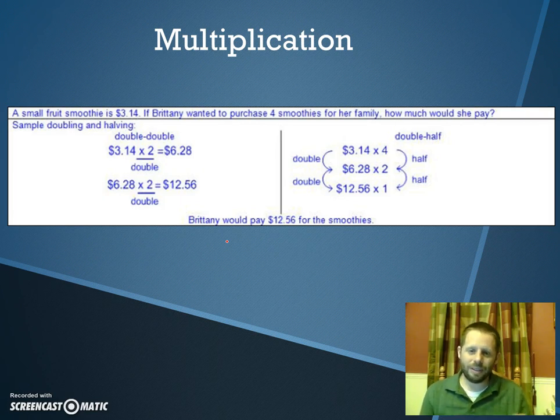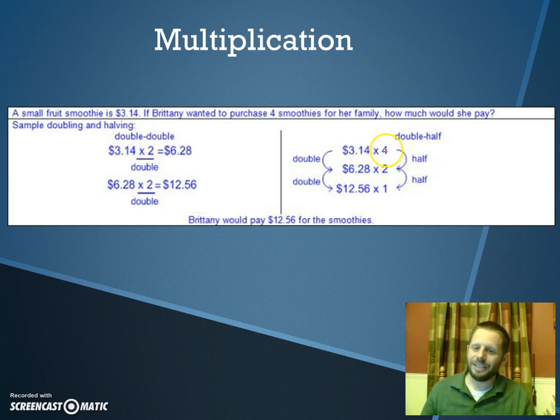The other side of the screen here is showing you a different way to look at it. Our original problem was $3.14 times 4. You got to think about this a little bit. If I half the 4, then I would need to double this to keep the problem the same. So if I half the 4, double this number, I still have the same problem because I haven't changed really anything. I've doubled one side and I half the other side. So the problem still remains the same.